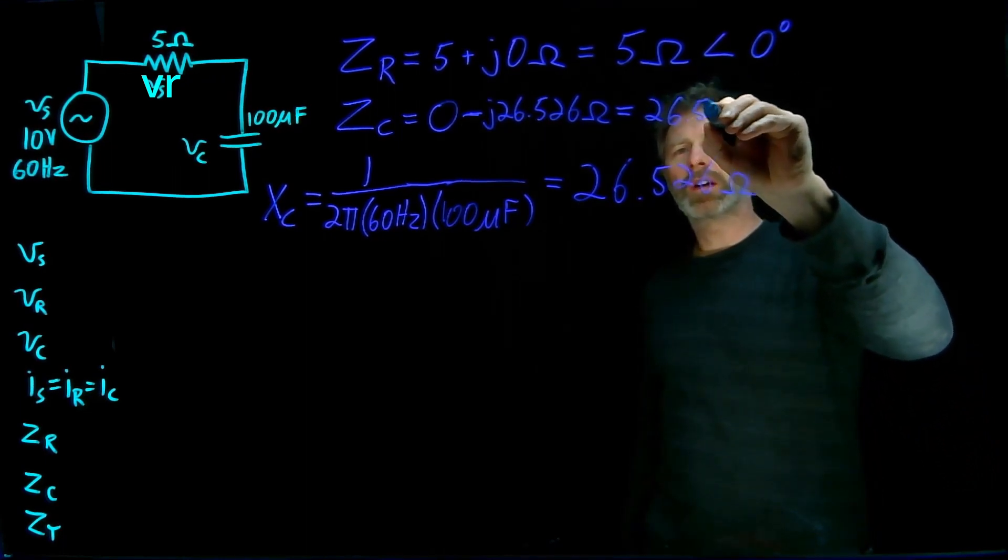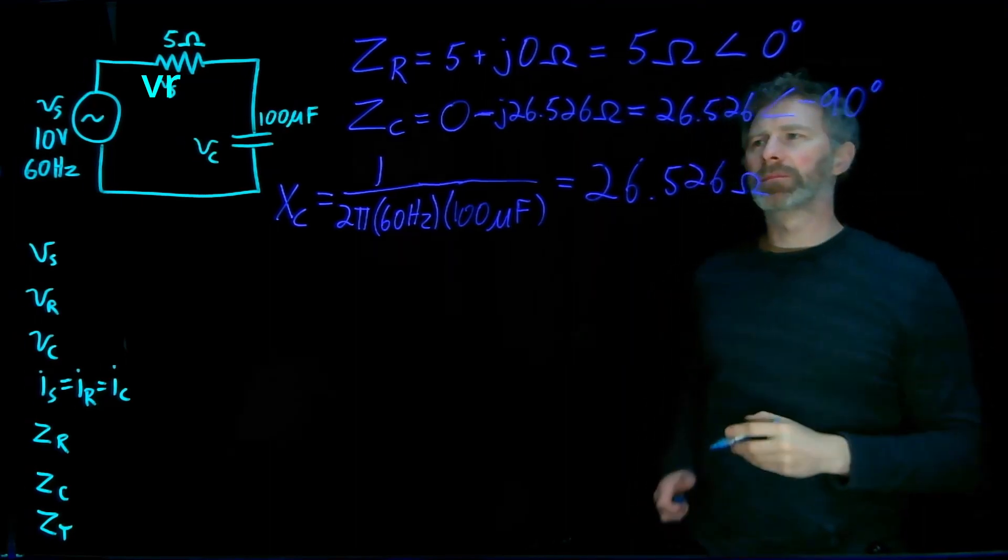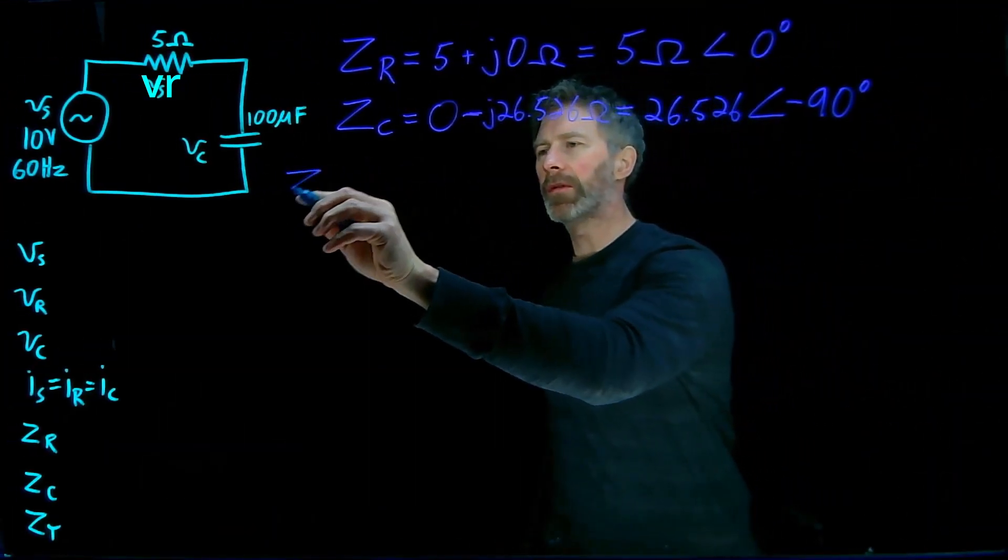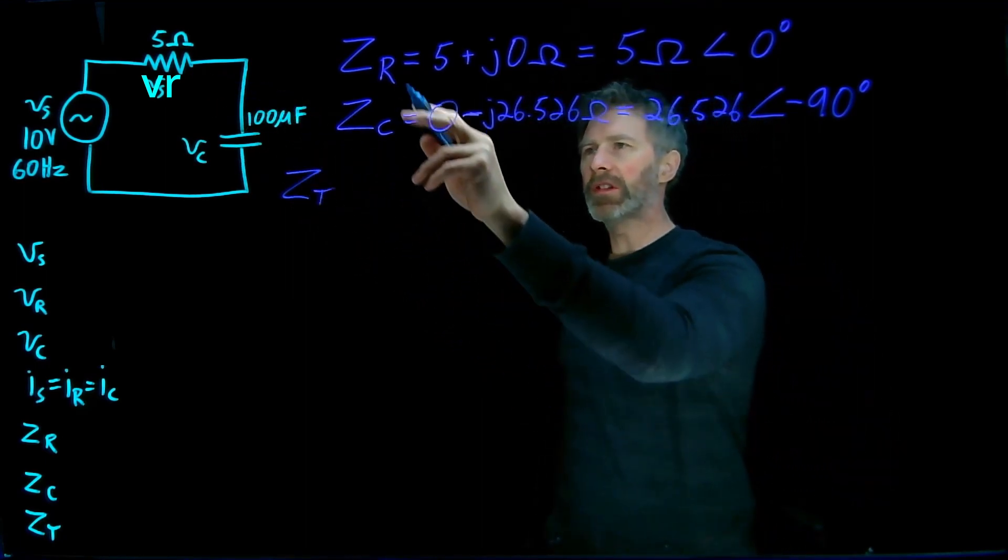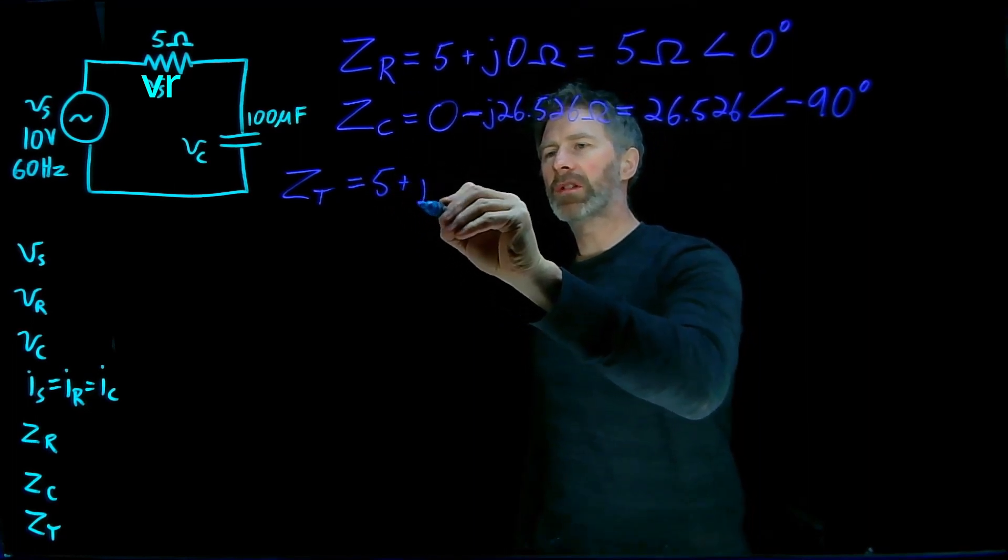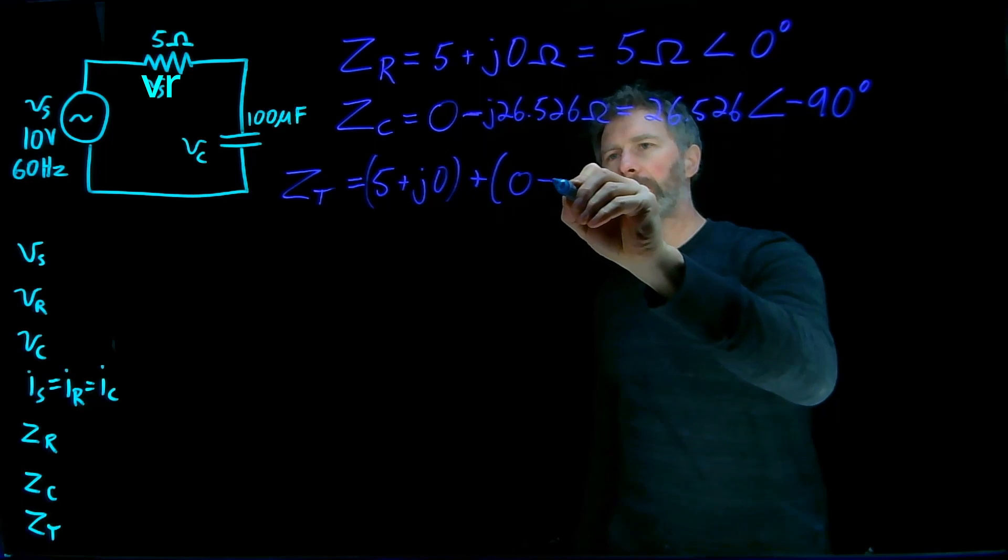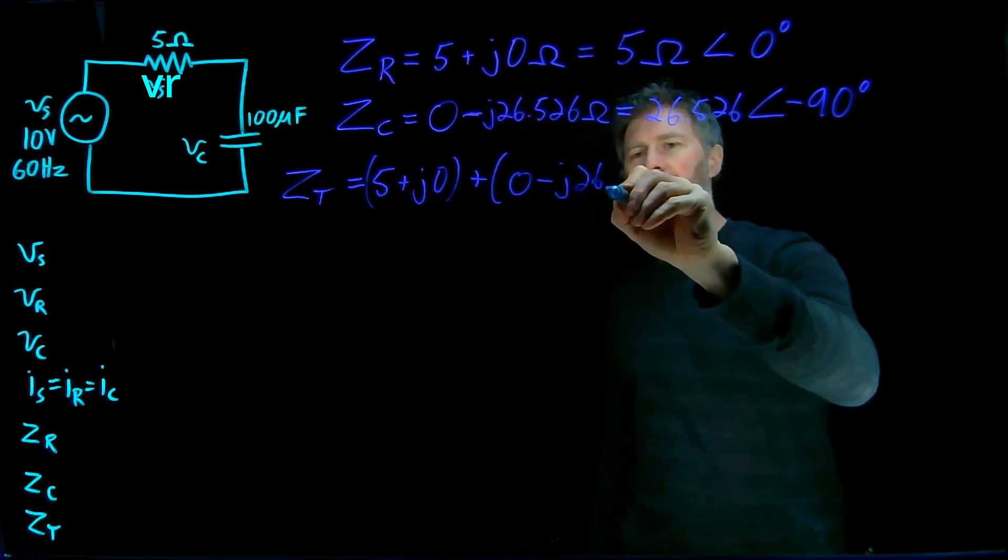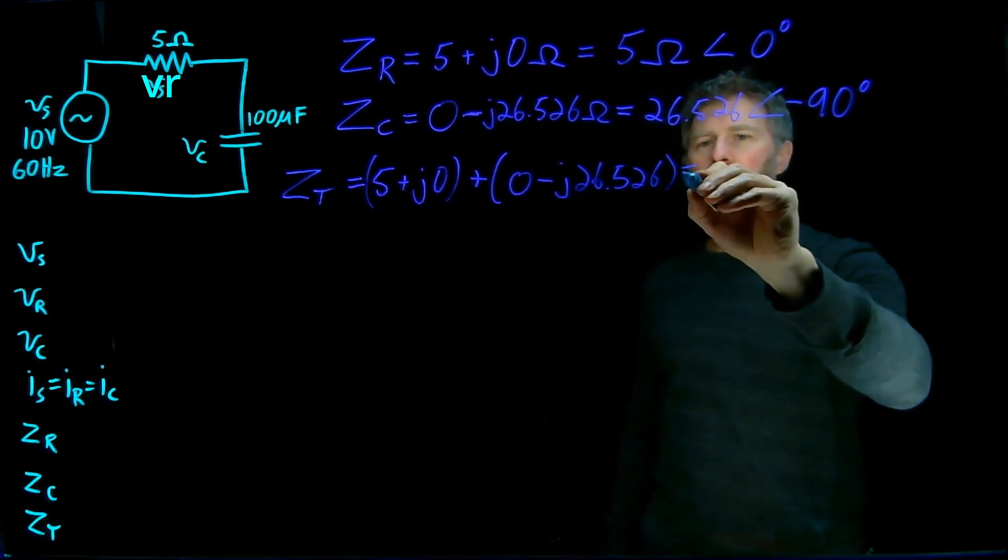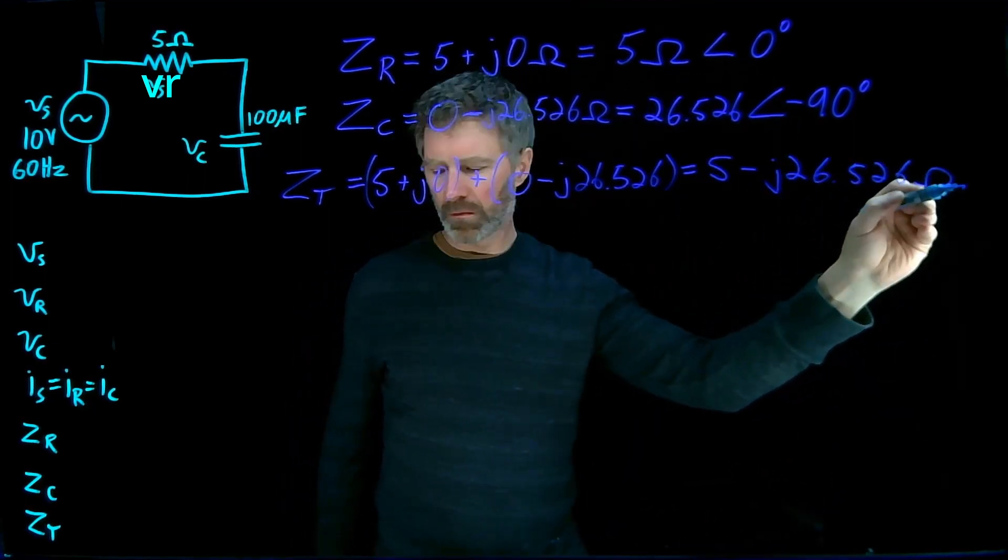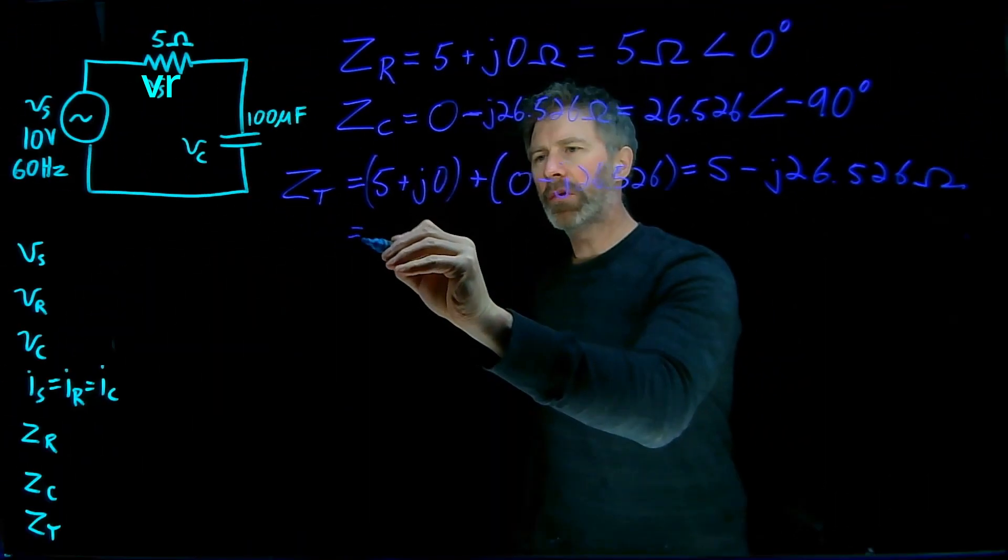The total impedance will simply be the sum of those two because these components are in series with each other. So it's Zr plus Zc. That's five plus j zero plus zero minus j 26.526. The real parts add, the imaginary parts add, and we end up with five minus j 26.526 ohms.